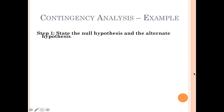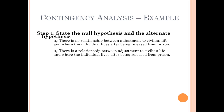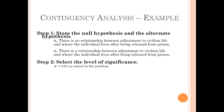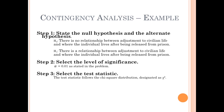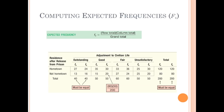State null and alternative hypotheses: the null is there is no relationship between adjustment to civilian life and where the individual lives after being released from prison; the alternative is that there is a relationship. Alpha equals 0.01 as stated in the problem. The test statistic is chi-squared and the equation stays the same as goodness of fit — you'll just have more cells to sum. To calculate expected frequencies, use the formula: row total times column total divided by grand total.